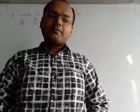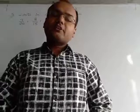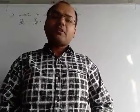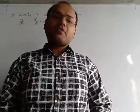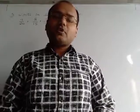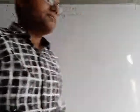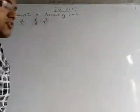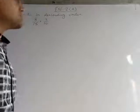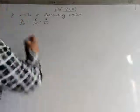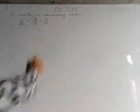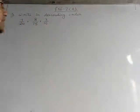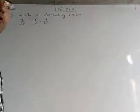Hello students. Today in this video I will explain the remaining questions of exercise 2. Question number 5: write in descending order. Three fractions are given and we have to arrange these fractions in descending order.